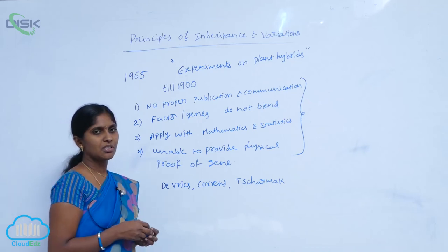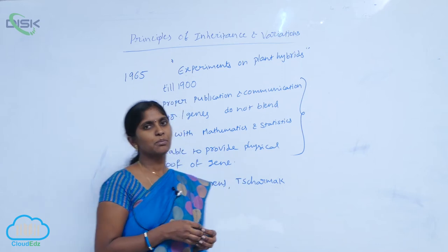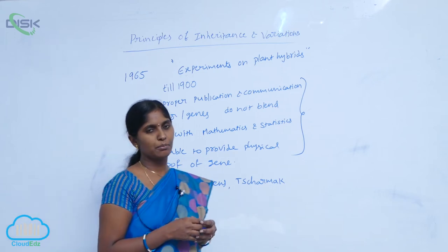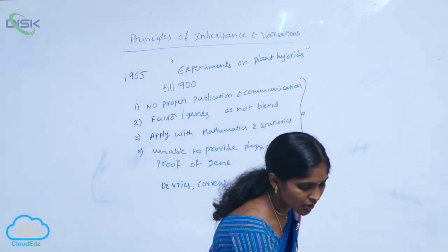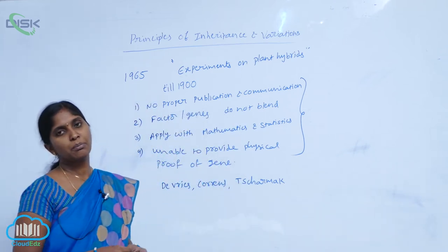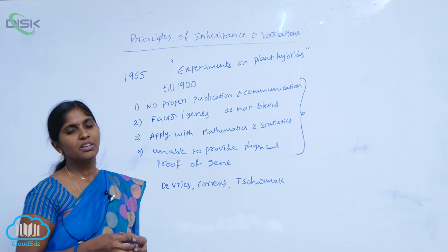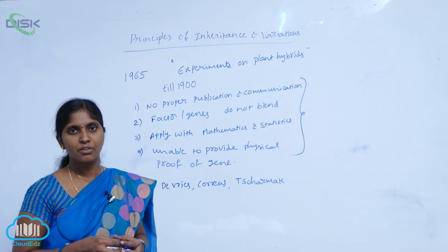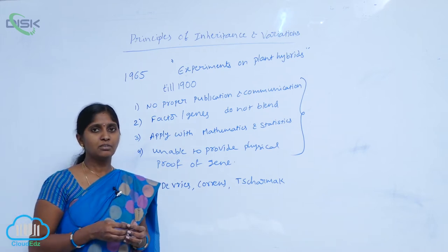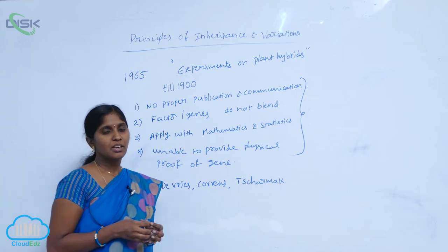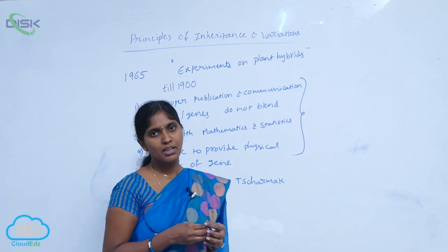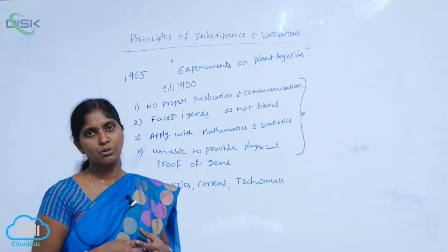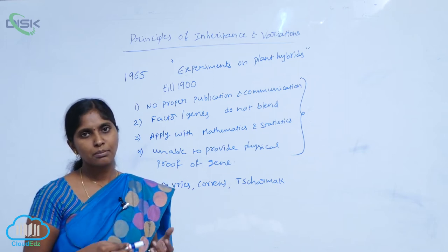Principles of Inheritance and Variations. Mendel published his experiments in the year 1865 in the publication 'Experiments on Plant Hybrids,' but his contemporaries did not accept his work. The reasons for non-acceptance include no proper publication and communication. He gave the idea of factors and genes with two contrasting alleles that remain distinct and do not blend — a concept not accepted by scientists at the time.